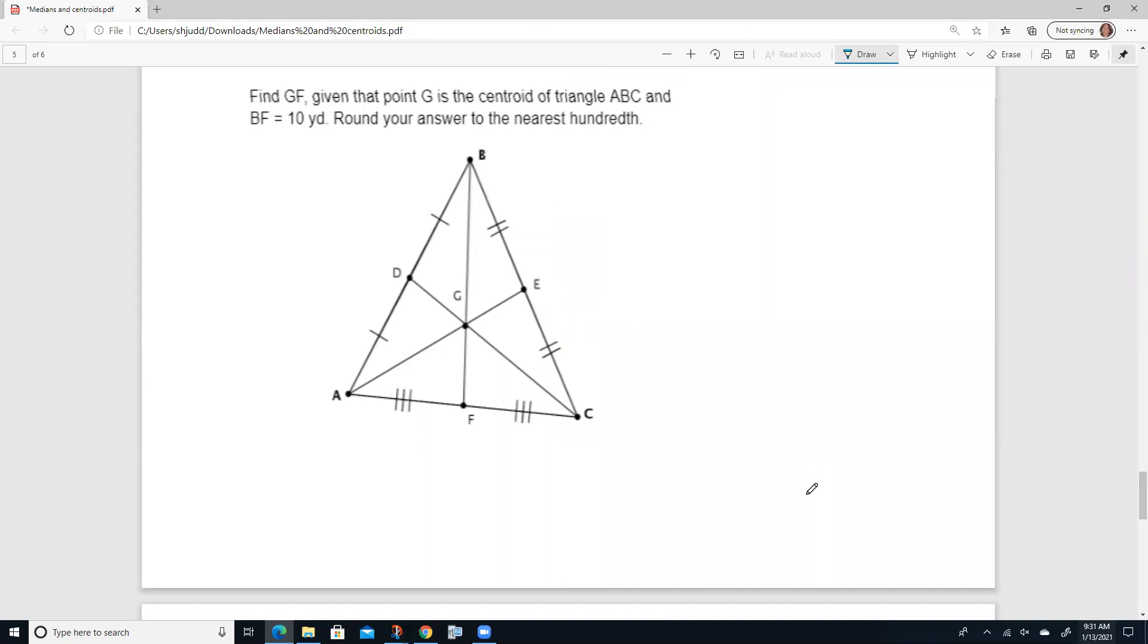Find GF. Ooh, GF. That's the small one. So we're going to try and find the small one. Given that G is the centroid of the triangle and BF. Okay, so BF is this whole distance is 10.